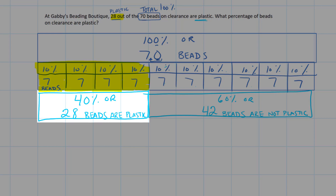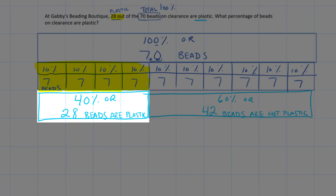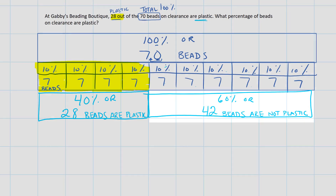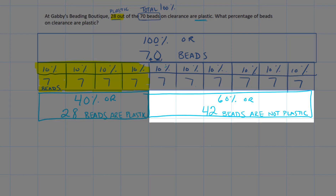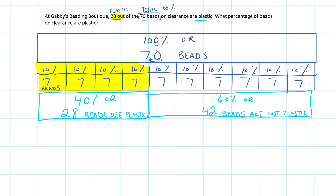We've got two different answers here, and that's what we want to do — model multiple answers so that anything the question asks, we're going to be able to answer. I'd take a picture of my work and put it onto our Google Slide assignment that went along with this question.